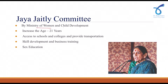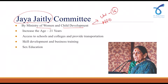This bill was framed under the recommendations of a committee set up by the Ministry of Women and Child Development under Jaya Jetli. This committee consulted many universities and NGOs — nearly 16 universities were consulted regarding the increase in the marriageable age for girls. The committee recommended increasing the age to 21 years and also recommended providing access to schools and colleges so that girls can be empowered.